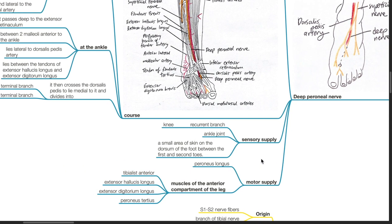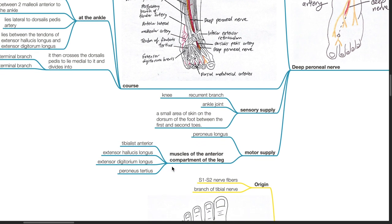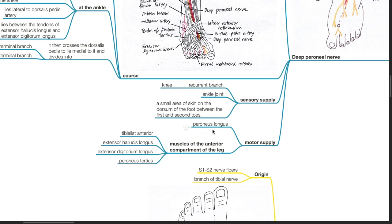Sensory supply of the deep peroneal nerve: The recurrent branch supplies the knee; it also supplies the ankle joint. The deep peroneal nerve supplies a small area of skin on the dorsum of the foot between the first and second toes. Motor supply: muscles of the anterior compartment of the leg including tibialis anterior, extensor hallucis longus, extensor digitorum longus, and peroneus tertius.